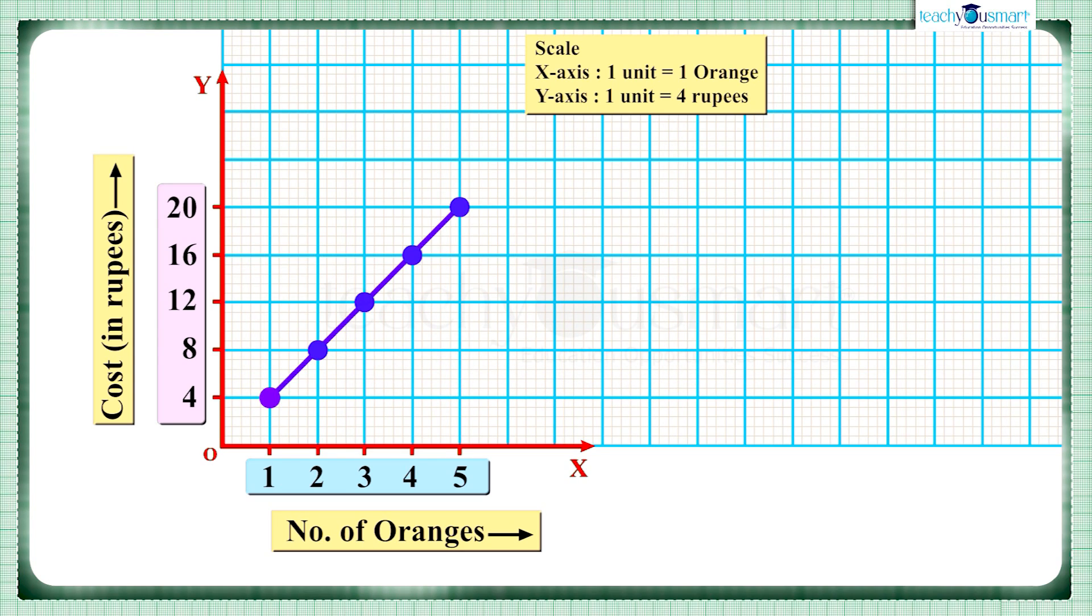Here also the two quantities, that is number of oranges and the cost of oranges, have a relationship. As the number of oranges increases, the cost of oranges also increases, or we can say that the cost changes with respect to the number of oranges. That is, the cost of oranges increases linearly with the number of oranges.